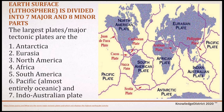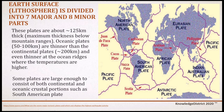The Earth's surface is divided into seven major and eight minor parts. The largest major tectonic plates are: Antarctica, Eurasia, North America, Africa, South America, Pacific — which is almost entirely oceanic — and the Indo-Australia plate. These plates are approximately 125 kilometers thick, with maximum thickness below mountain ranges.